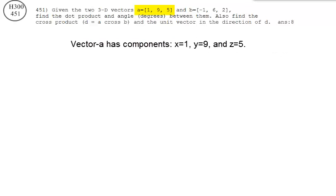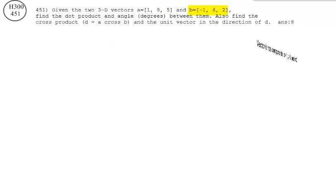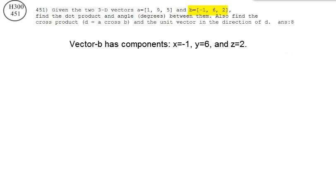Vector A has components x equals 1, y equals 9, z equals 5. Vector B has components x equals negative 1, y equals 6, z equals 2.